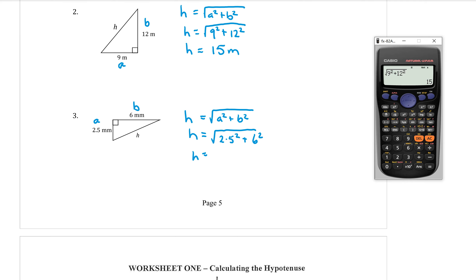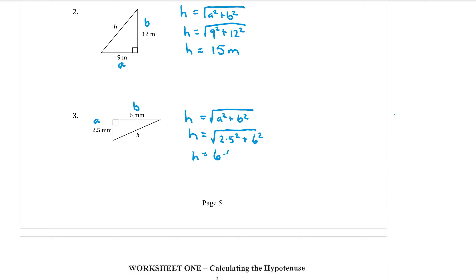And in the calculator, square root 2.5 squared plus 6 squared. Okay, so that equals 6.5. And the units are millimetres. So in some of your questions, you may have to round your answers to two decimal places.